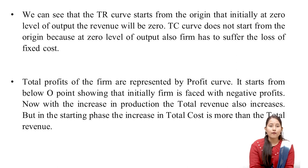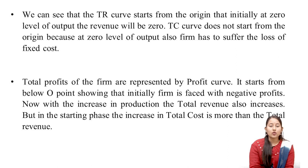Total profits of the firm are represented by the profit curve. It starts from below the O point, showing that initially the firm is faced with negative profits, as there is no revenue at zero level of output. With the increase in production, total revenue also increases, but in the starting phase the increase in total cost is more than the total revenue.